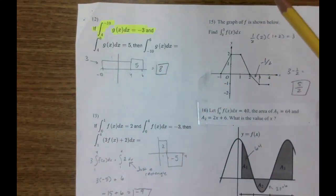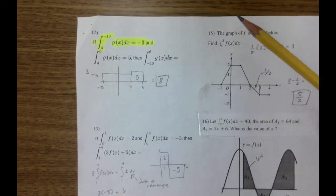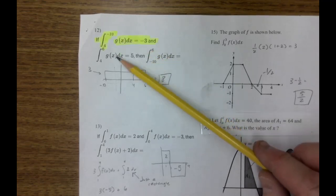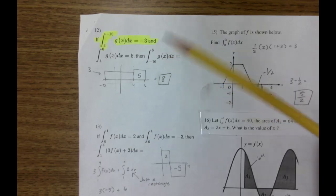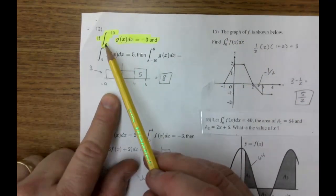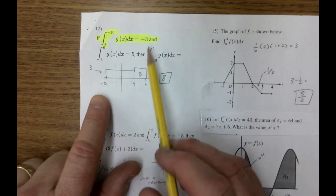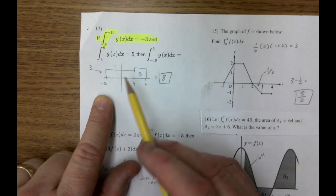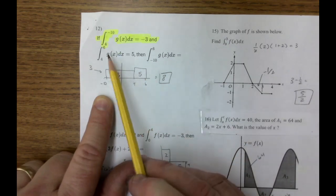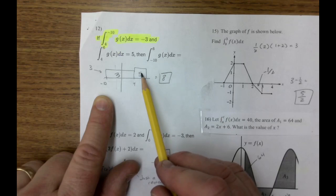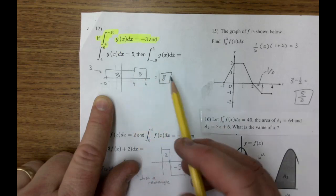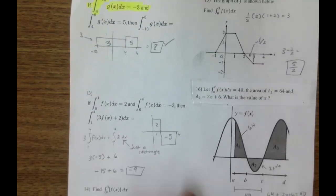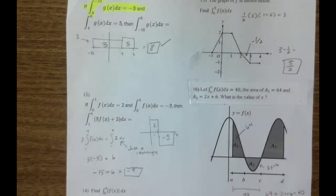All right. And you need to know how to do number twelve. Twelve is the ones where they're going to give you an integral. And they're going to give you another integral. And you have to piece them together to find a third integral. So in this first integral, it says from four to negative ten. Four to negative ten, the area is negative three. If you do the reverse, it's a positive three. So this area here is positive three. And then it says from four to six is five. That's right there. Three plus five is eight. You piece together the areas you need. And then after that, you answer what you're looking for.